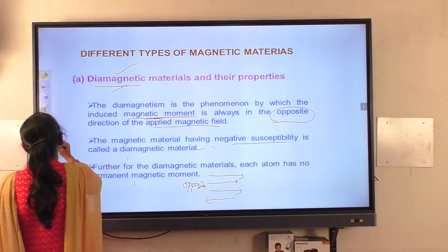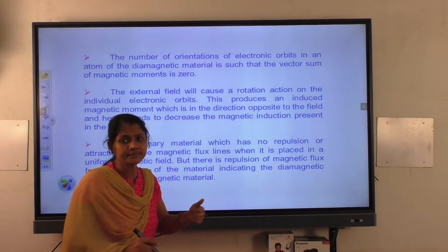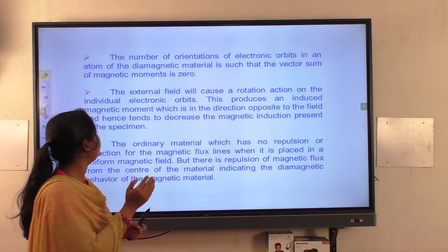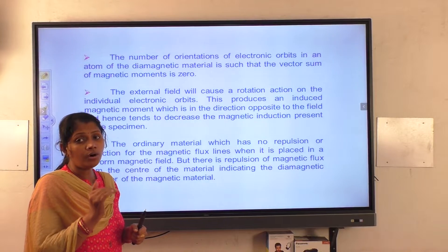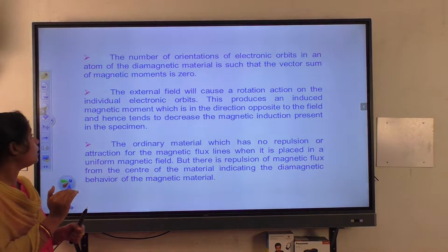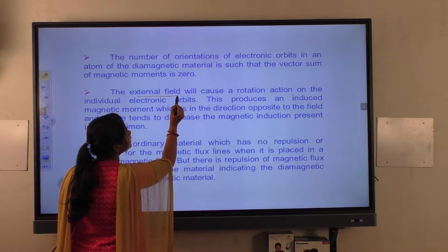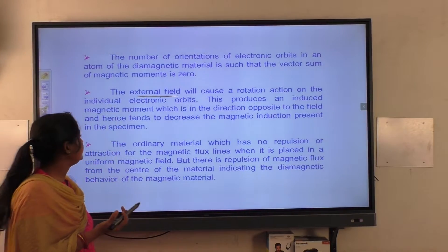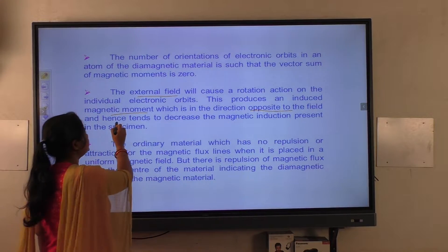In case of diamagnetic material, each atom has no permanent magnetic moment. The number of orientations of electronic orbits in an atom is such that the vector sum of magnetic moment is zero. The external field causes a rotation acting on the individual electronic orbits, which produces an induced magnetic moment opposing the magnetic field.